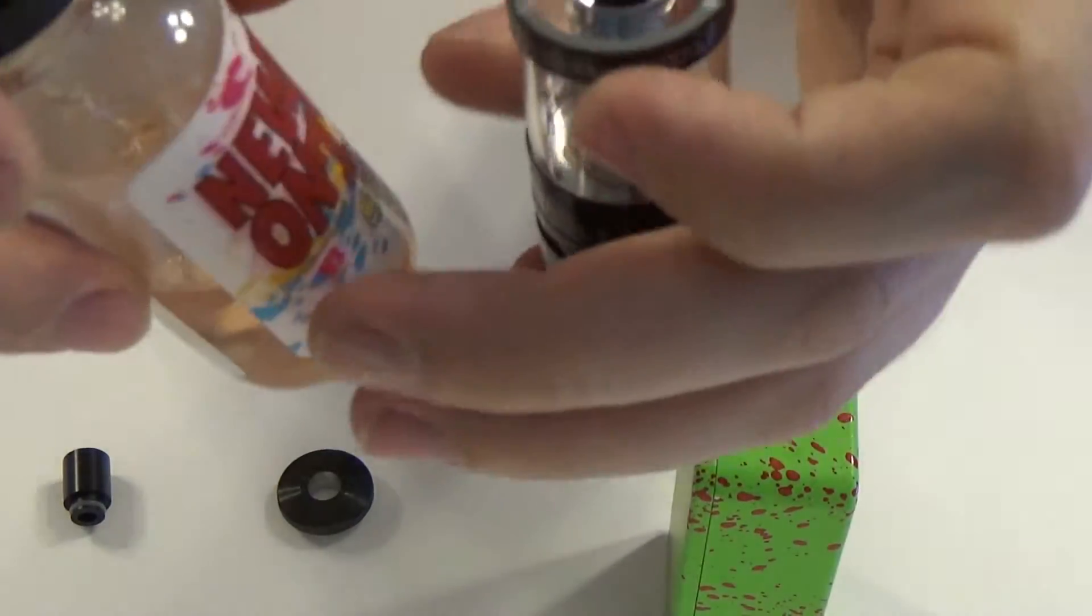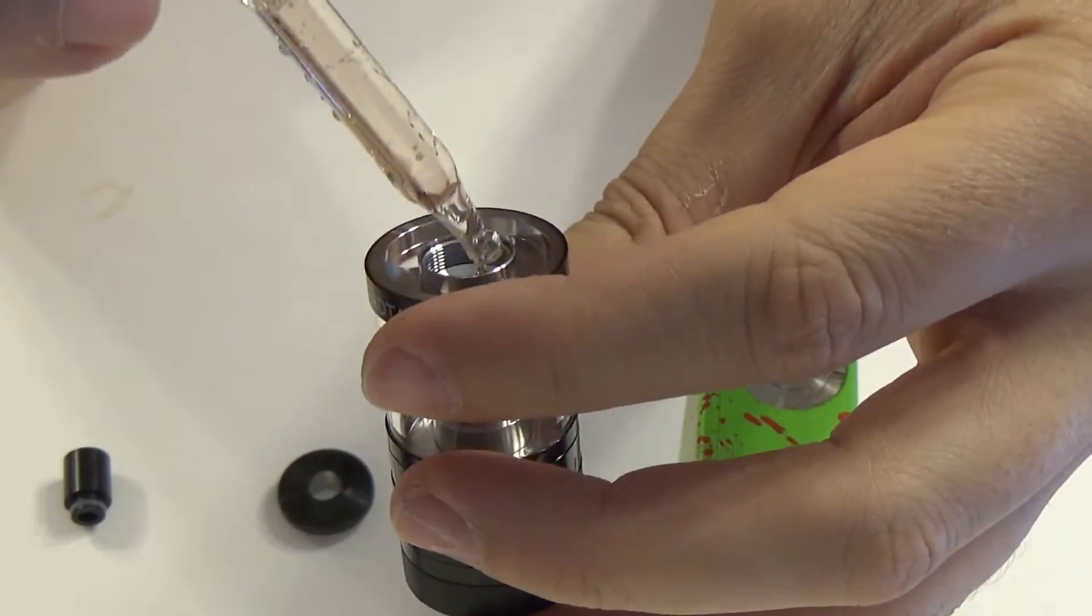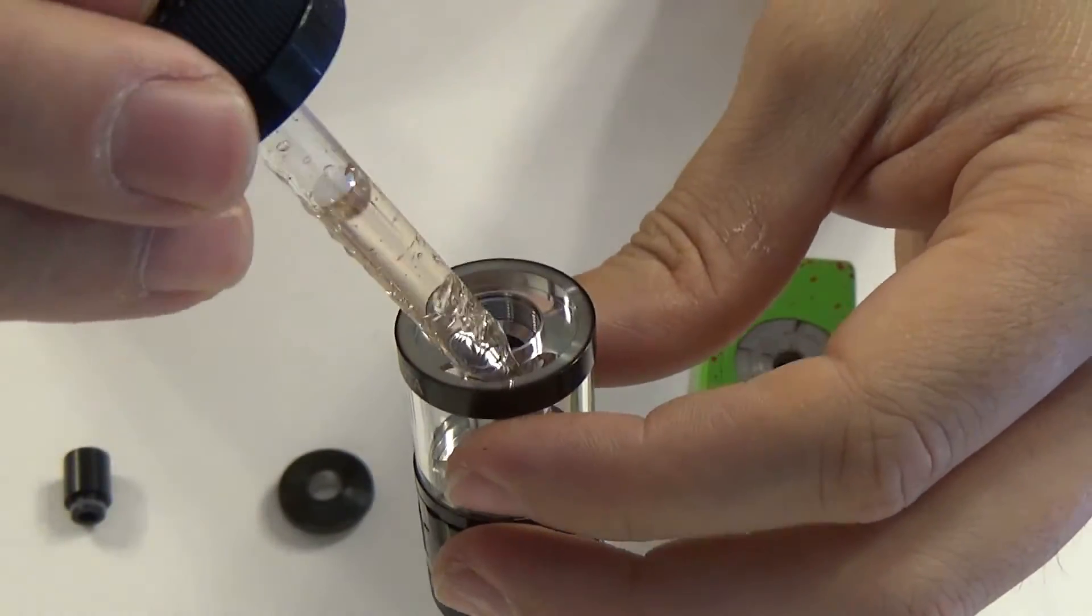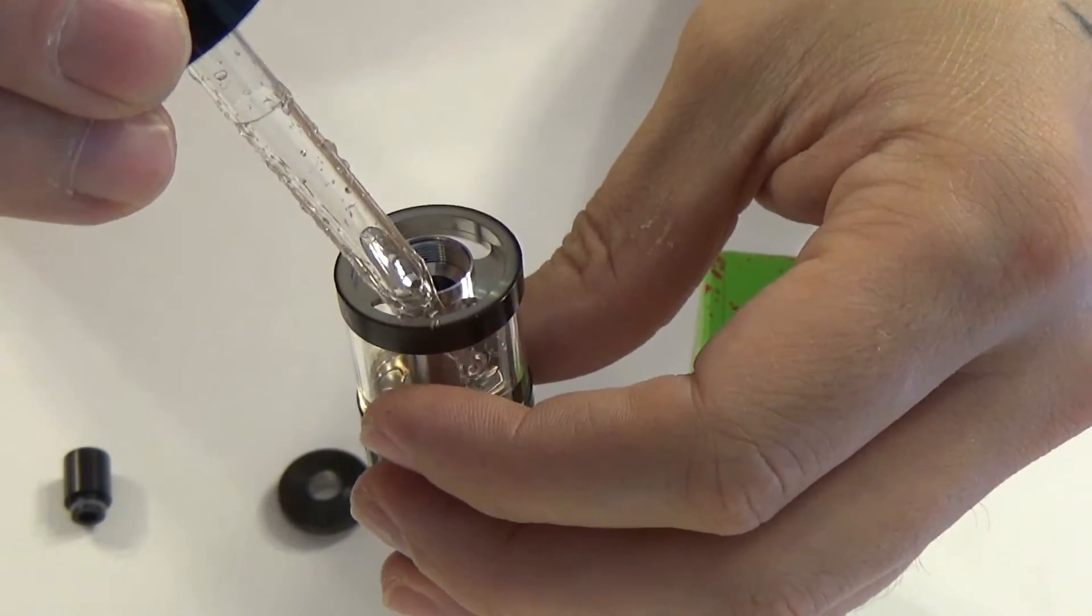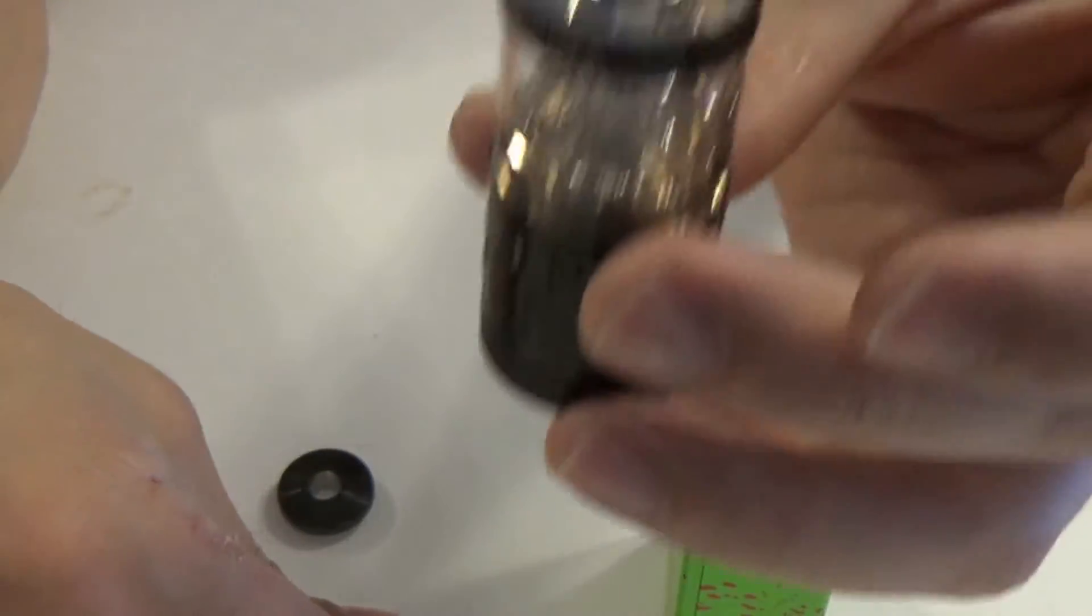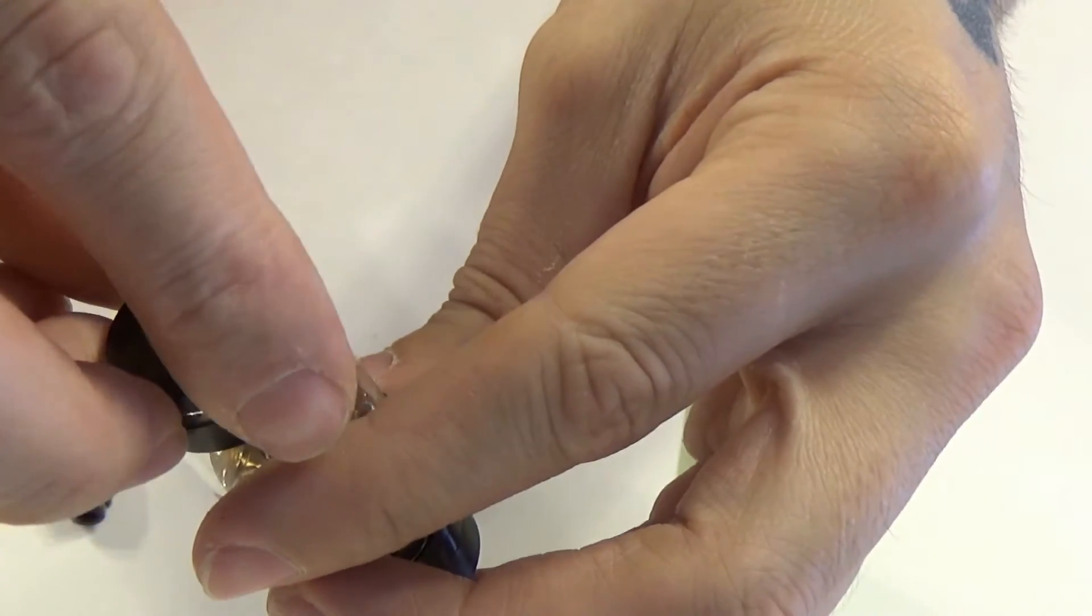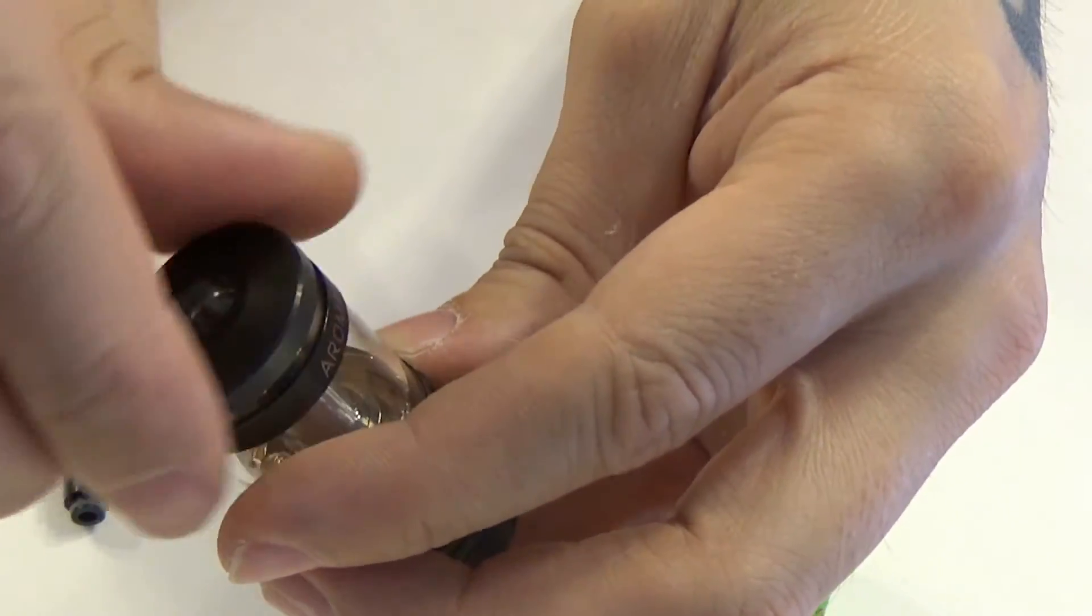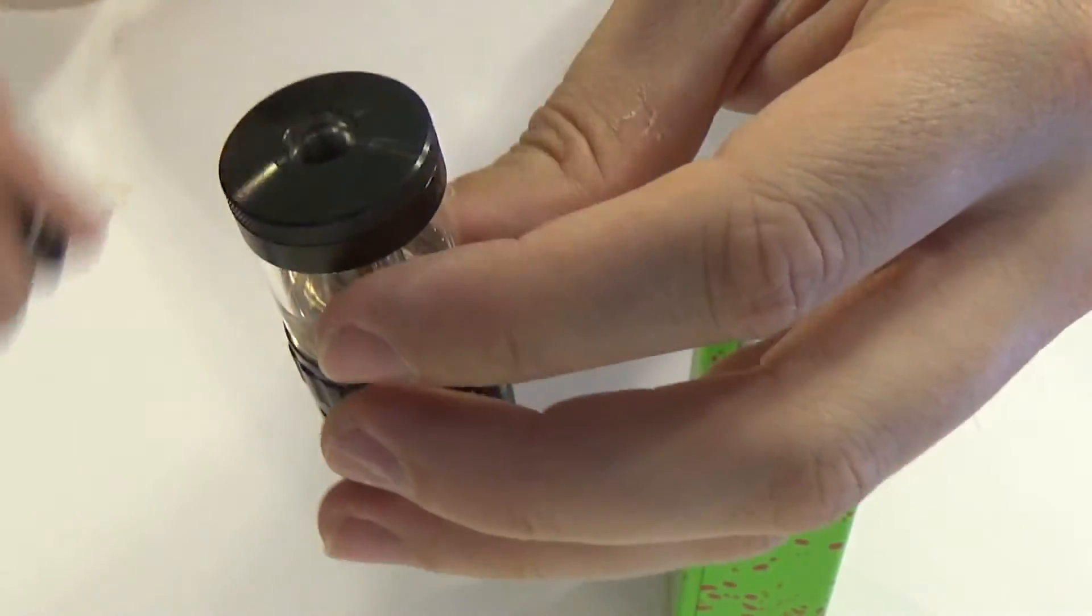Then we're just going to fill it. I'm using Steep by Steep by New Drips on the Block. It's like a delicious orange sucker kind of flavor. This thing holds seven milliliters, so we aren't going to fill it all the way up. There we go, partially filled. Then just screw your top cap back on, which also has the same nice knurling. Pop your drip tip in.